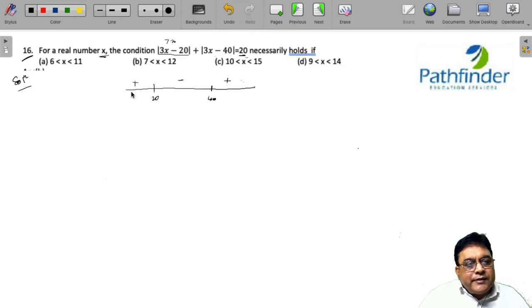And if 3x is less than 20, suppose let us say a number of 15. So, 15 minus 40 itself will become greater than 20. So, for any value less than 20, you cannot have a solution.